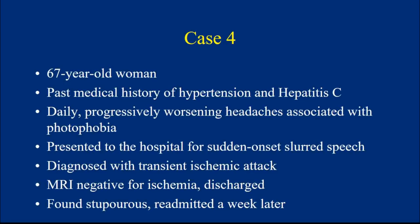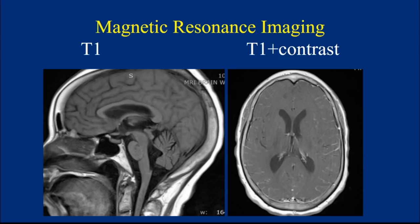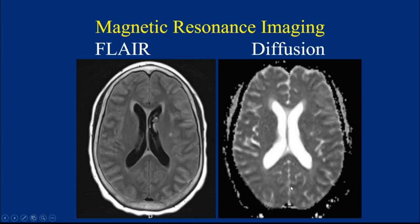Moving to case 4 — an interesting case: a 67-year-old woman with hypertension and hepatitis C who had progressive worsening headaches and photophobia, presenting with sudden-onset slurred speech diagnosed as a transient ischemic attack. MRI was negative for ischemia and she was discharged, then found stuporose and readmitted a week later. On MRI, particularly T1 with contrast, you can see enhancement of the leptomeninges — a subtle finding, but that white signal shouldn't be there. It tells you the meninges are enhancing. There are also some cortical abnormalities on diffusion suggesting parenchymal injury.